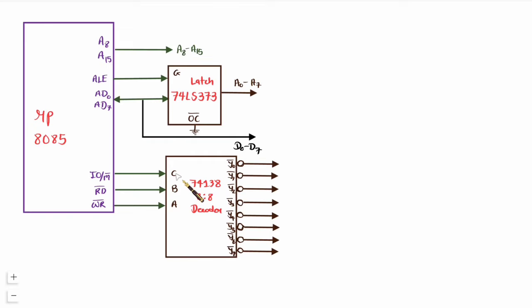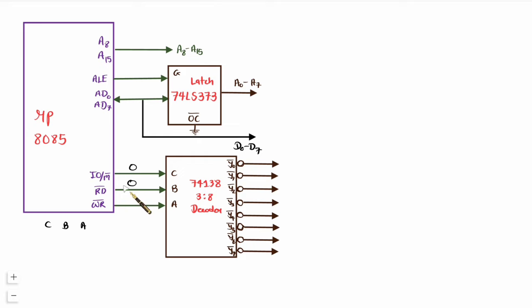To generate memory read: IO/memory bar = 0, read bar = 0, write bar = 1, giving binary 001, which selects Y1. So active-low Y1 is the memory read bar signal. For memory write: IO/memory bar = 0, read bar = 1, write bar = 0, giving 010 = 2, so Y2 is the memory write bar signal. For IO read: IO/memory bar = 1, read bar = 0, write bar = 1, giving 101 = 5, so Y5 is IO read bar. For IO write: IO/memory bar = 1, read bar = 1, write bar = 0, giving 110 = 6, so Y6 is IO write bar.